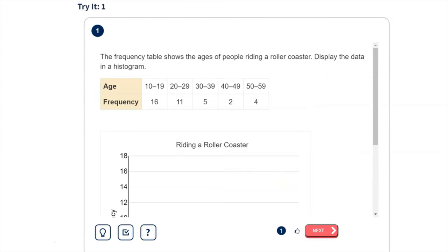So let's see if we can make a histogram using this frequency table here. This frequency table shows the ages of people riding a roller coaster. Display the data in a histogram. So we can see people from ages 10 to 19, there were 16 people that rode the roller coaster. From age 20 to 29, there were 11 people that rode the roller coaster.